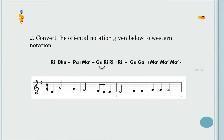The third bar has D note minim, then G, Ga — that is E. Two E notes as crotchets. Then F sharp — two crotchets and a minim. You have to write Thibre, Thibre, and again Thibre with a small dash. I hope you understood the lesson well. Thank you very much.